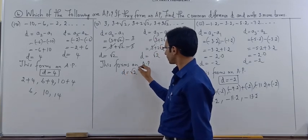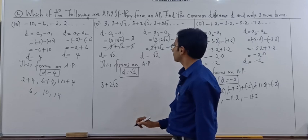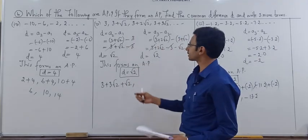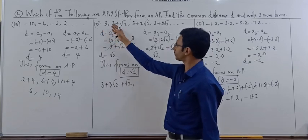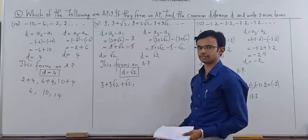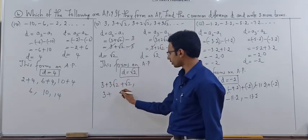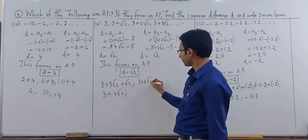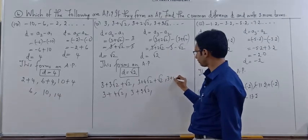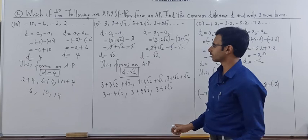The common difference is √2. For the next three terms, take the fourth term 3 + 3√2 and add √2: 3 + 3√2 + √2 = 3 + 4√2. Then 3 + 4√2 + √2 = 3 + 5√2. Then 3 + 5√2 + √2 = 3 + 6√2. The 3 remains as it is, and the like terms — the root-2 terms — simply add. So the three next terms are 3 + 4√2, 3 + 5√2, and 3 + 6√2.